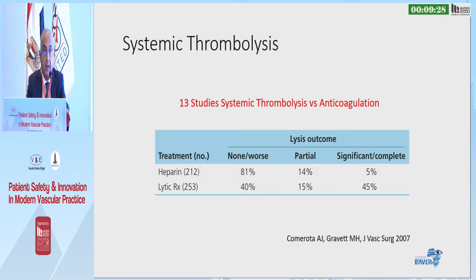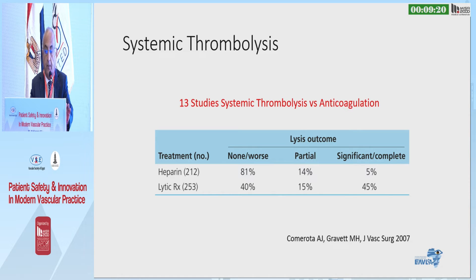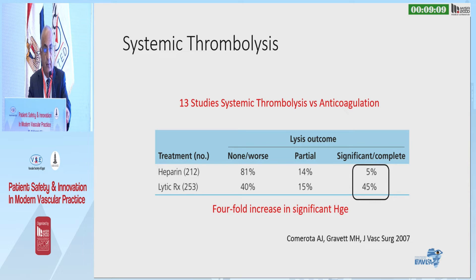Then came systemic thrombolysis, during which the thrombolytic agent was injected into a peripheral vein for the treatment of proximal DVT. A review by Dr. Komarata showed that there is significant clot lysis in the thrombolytic group as compared to the anticoagulation group. However, this came at the heavy price of a fourfold increase in significant hemorrhage.